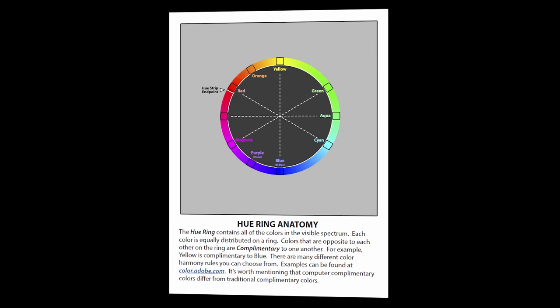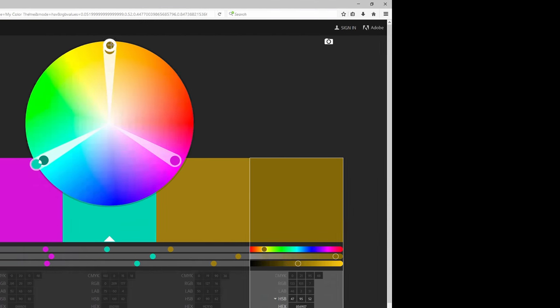And on the next page we'll look at the hue ring in more detail. The hue ring contains all of the colors in the visible spectrum. Each color is equally distributed on a ring. Colors that are opposite to each other on the ring are complementary to one another. For example, yellow is complementary to blue.